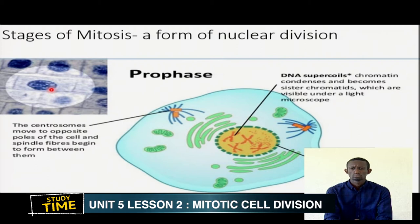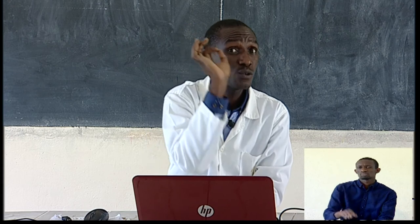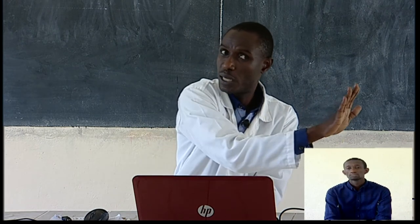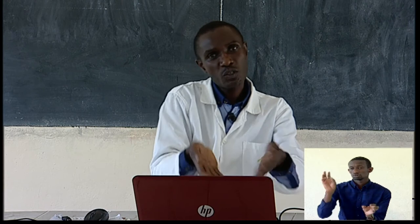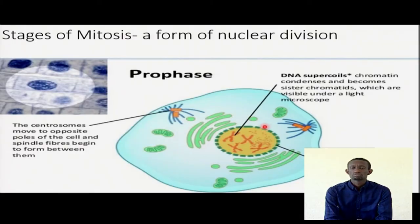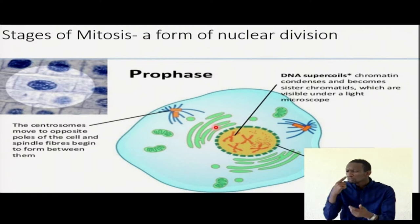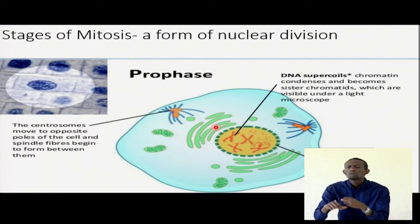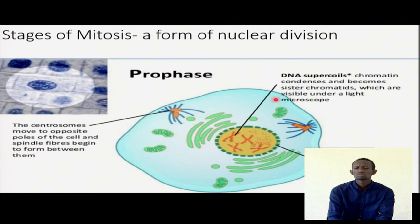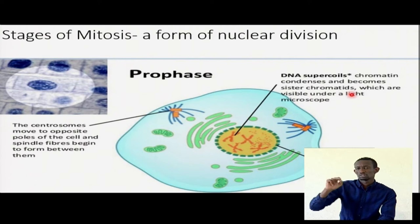It is very common for students to always be talking about mitosis and start with interphase — no. That is scientifically wrong. It's a preparation stage for mitosis. So if they ask you about mitosis, start with prophase. This is the appearance of the cell during prophase. When chromatin condenses and becomes sister chromatids that are now visible under the light microscope, we are able to see what is inside.